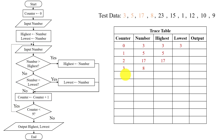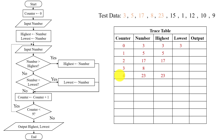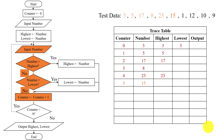3 is less than 9 — yes. Input another number, that is 23. 23 will be placed here. Now check if 23 is greater than 17 — yes. Place 23 here. Then counter will be incremented to 4, and 4 is less than 9 — yes. Input another number, which is 15. 15 will be placed here. Then 15 is greater than 23 — no. 15 is less than 3 — no. So counter will be incremented to 5.